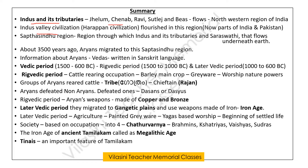That is Indus Valley Civilization — Sindhu Nadidada Samskaram — otherwise known as Harappan Civilization. Then the Sabthasindhu Region, Migration of Aryans, and information obtained from the Vedas. The Vedic period, Rugvedic period — tribes led by a chieftain called Rajan. Aryans defeated non-Aryans; the defeated ones were called Dasan. In the Rugvedic period, weapons were made of copper and bronze. In the later Vedic period, they migrated to the Gangetic Plains and used weapons made of iron — called the Iron Age.